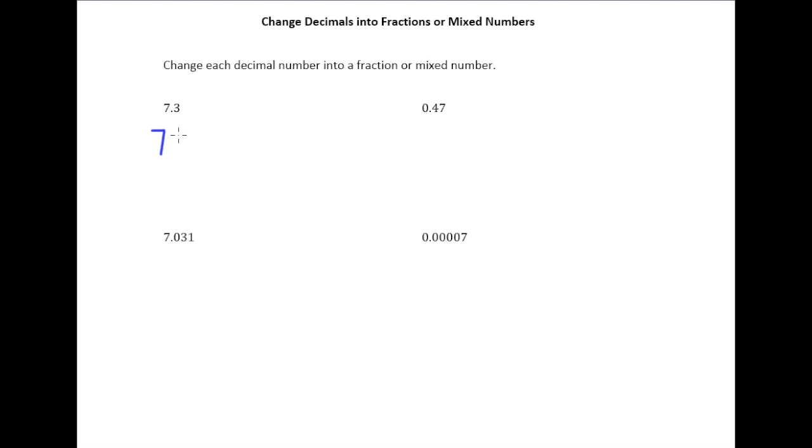Well we know how to write 3 tenths as a fraction. That's just 3 tenths. So really turning a decimal number into a mixed number or fraction is just really a matter of saying it correctly.